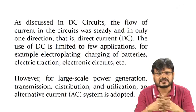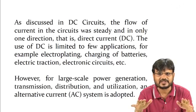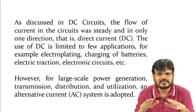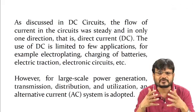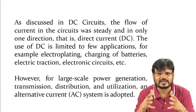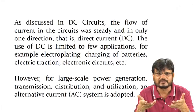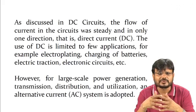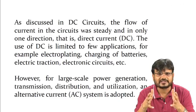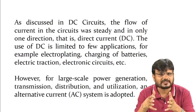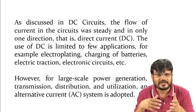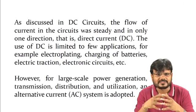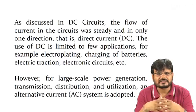In DC circuits, the flow of current is steady — constant and in one direction. The use of DC is limited to few applications like electroplating, charging of batteries, electric traction, and electronic circuits such as mobile phones powered by batteries. For large-scale power generation, transmission, distribution, and utilization, an AC system is adopted.